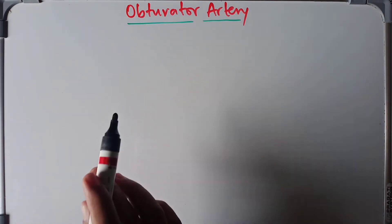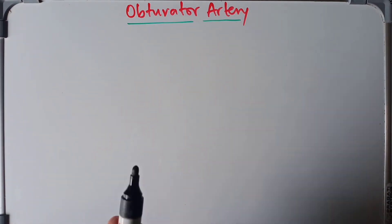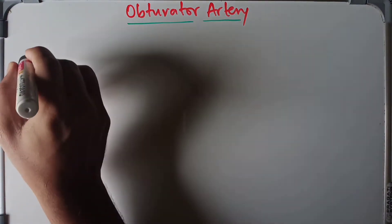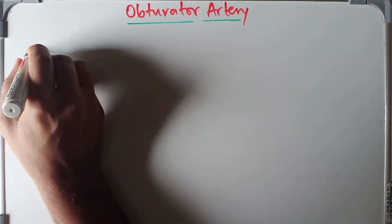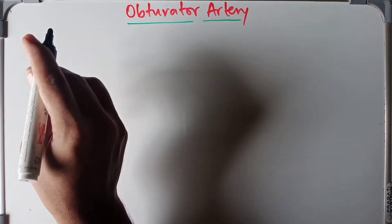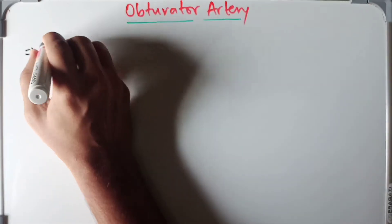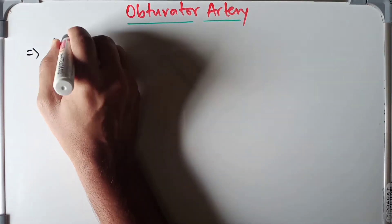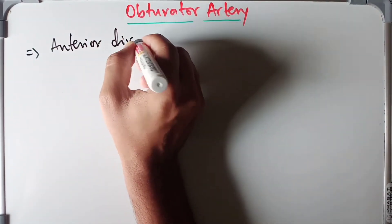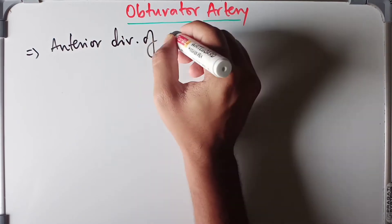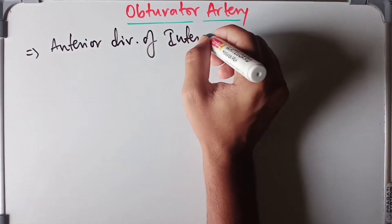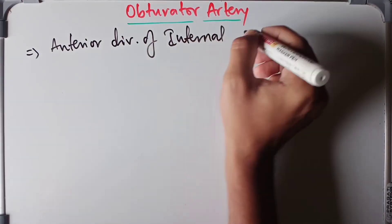Beginning with the obturator artery — this will just be a short video. The obturator artery arises from the anterior division of the internal iliac artery, from within the pelvis.